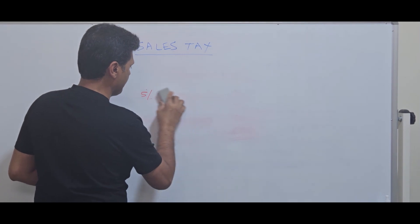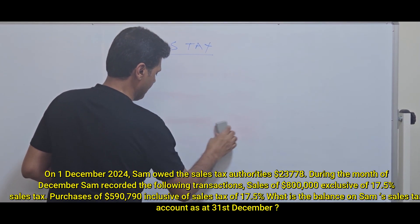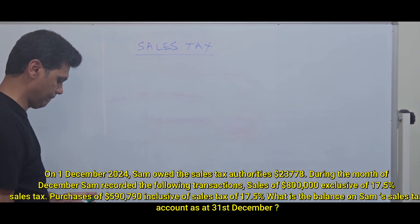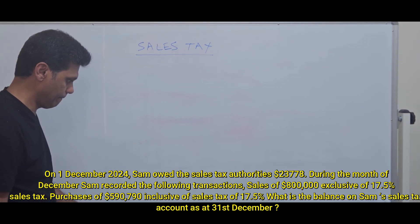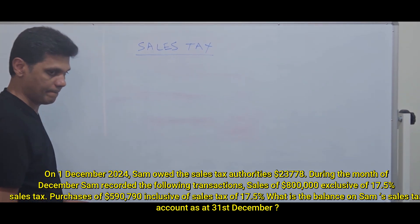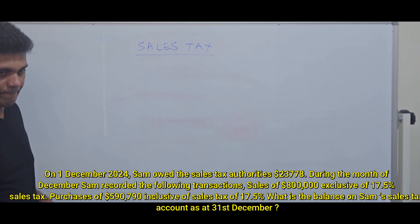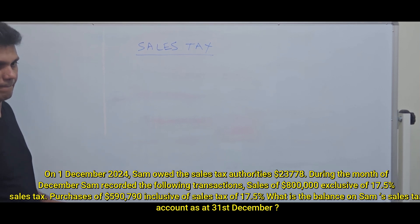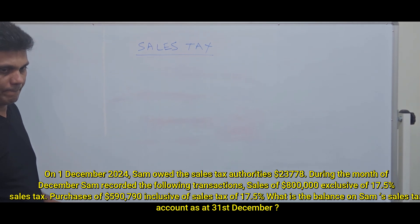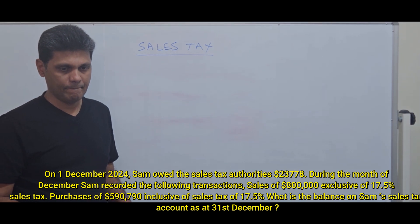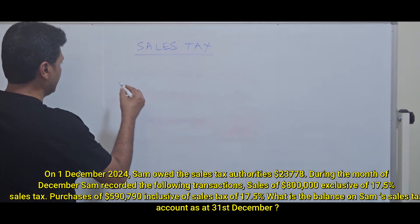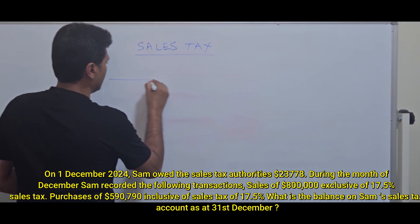At 1st December 2035, the sales tax authorities balance was $23,778. During the month of December, the following transactions were recorded: sales of $800,000 exclusive of 17.5% sales tax, and purchases of $590,790 inclusive of sales tax of 70.5%. So what is the sales tax account?